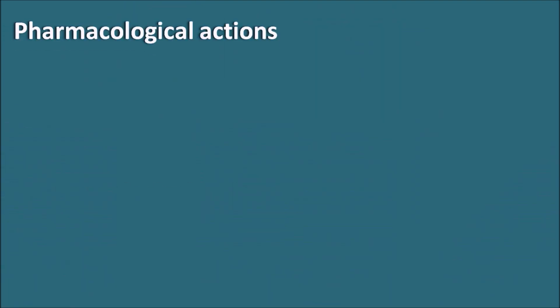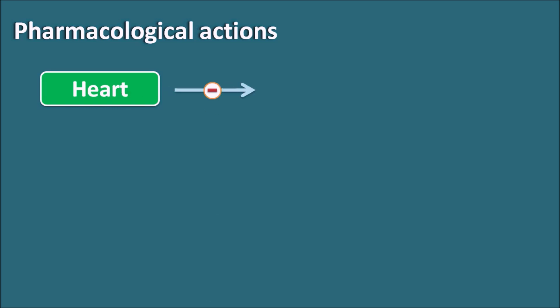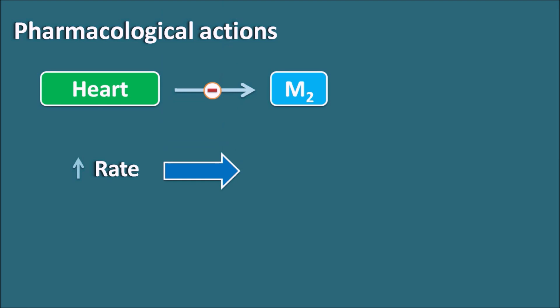Now let us see the pharmacological actions on different organs. First — the heart. M2 receptors are present on the heart. Anticholinergics block the M2 receptors, which are inhibitory in nature and normally decrease the rate as well as force of contraction. Since anticholinergics block M2 receptors, they increase the rate of contraction — that is why anticholinergics produce tachycardia as a side effect.